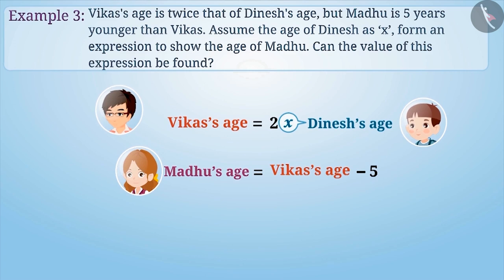Now, Madhu is 5 years younger than Vikas. So, can you tell the expression for Madhu's age? Pause the video and try to solve it. For Madhu's age, we can write the expression as 2x minus 5.